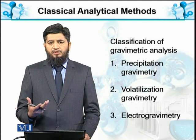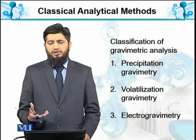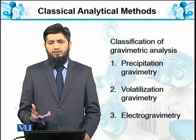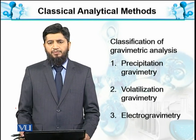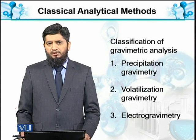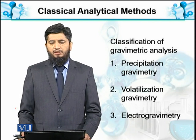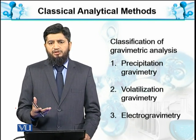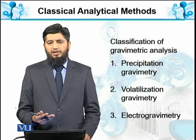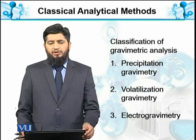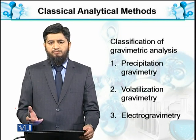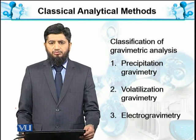اگر ہم analyte کو gaseous form میں transform کریں — کسی chemical method کے ذریعے — اور known chemical composition میں جو چیزیں باقی رہ جائیں، ان کو by weighing ہم difference معلوم کر سکتے ہیں کہ analyte کتنا evaporate ہوا ہے۔ Electrogravimetry میں electrolysis کے ذریعے ہم analyte کو الگ کرتے ہیں اور باقی رہنے والے material کی concentration کا difference معلوم کر کے analyte کی concentration معلوم کر سکتے ہیں۔